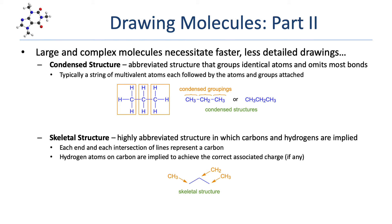When looking at condensed structures, it's important to recognize the difference between multivalent atoms — those that typically make more than one bond, like carbon, nitrogen, and oxygen — and monovalent atoms, those that typically make one bond, usually hydrogens and halogens. For each multivalent atom, we see what monovalent atoms are attached and indicate how many with a subscripted number. For propane, the leftmost carbon has three hydrogens attached, so we draw it as CH3.